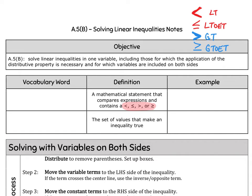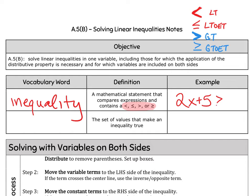Our objective today is not just to know about these symbols — that's prerequisite knowledge. Our goal is to solve linear inequalities in one variable, including those requiring the distributive property and variables on both sides. That sounds exactly like our objective when we solved equations. The only difference is we're solving inequalities — there will be no more equal signs. We're dealing with these four inequality symbols. Let's write down some definitions: an inequality is a mathematical statement that compares expressions and contains less than, less than or equal to, greater than, or greater than or equal to. An example might be 2x + 5 ≥ 15.